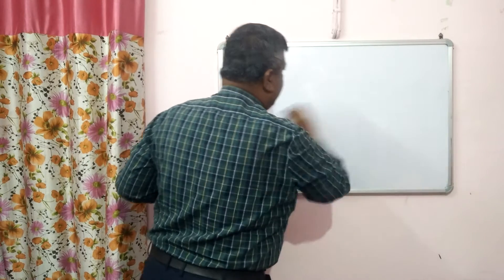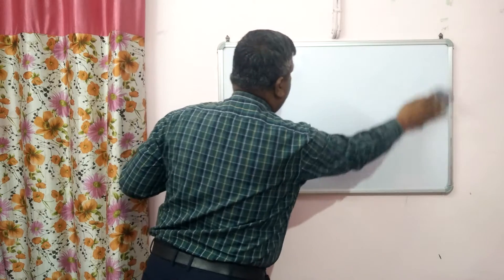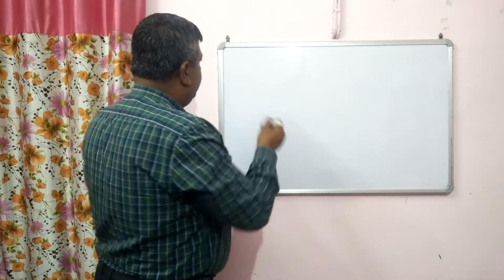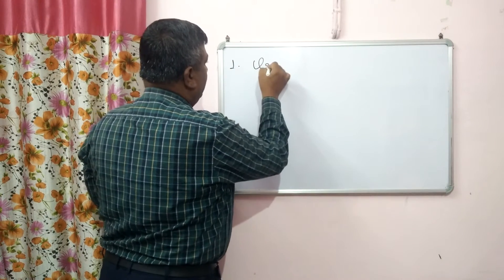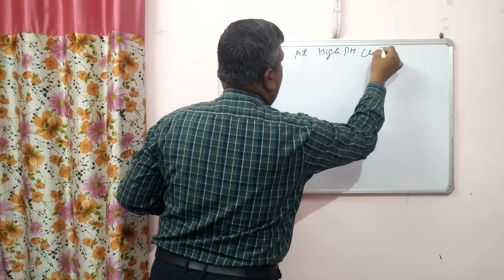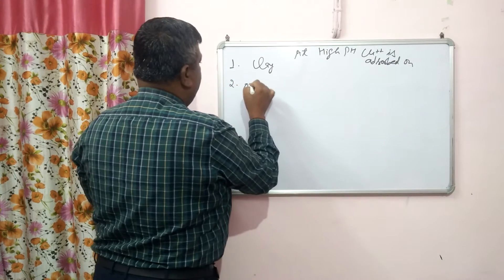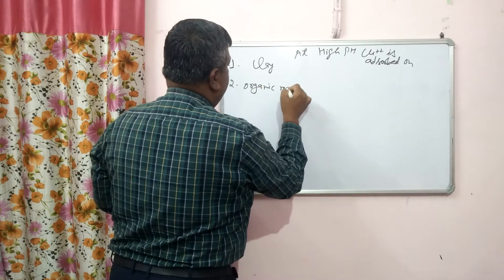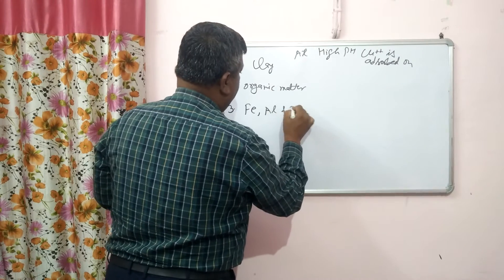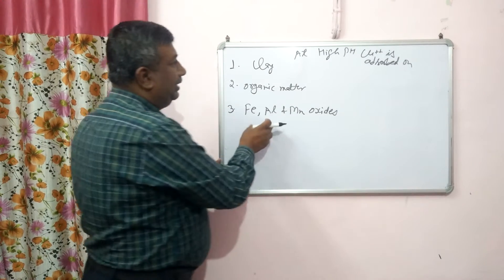For any nutrient to be available to the plant, it must first be in soluble form and present in the soil solution. If it is not in soil solution, it will not be available to the plant. As pH increases, Cu²⁺ is adsorbed on clay and organic matter. At high pH, copper is also adsorbed on iron, aluminium, and manganese oxides.